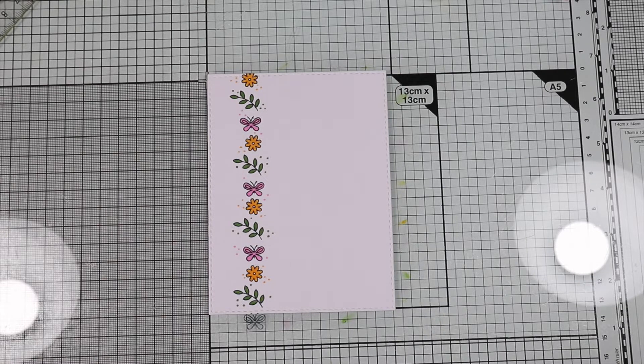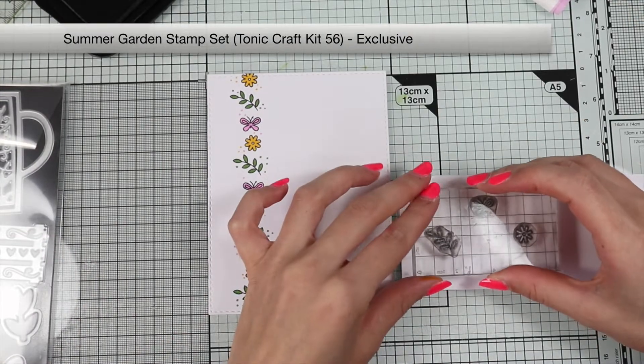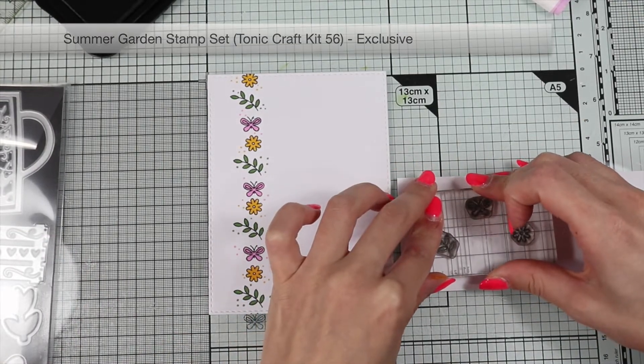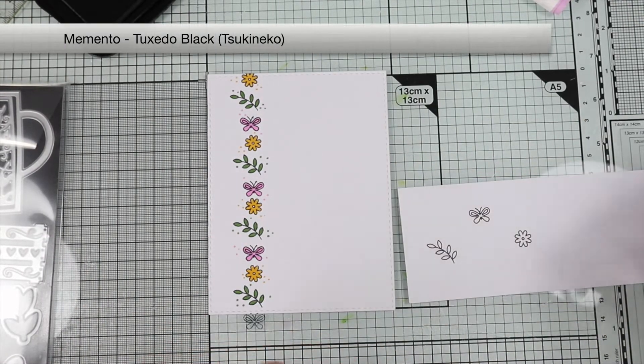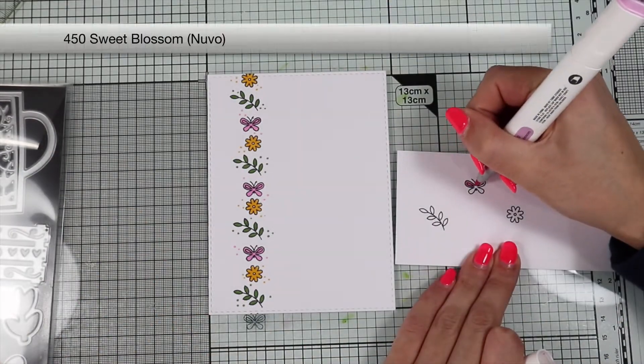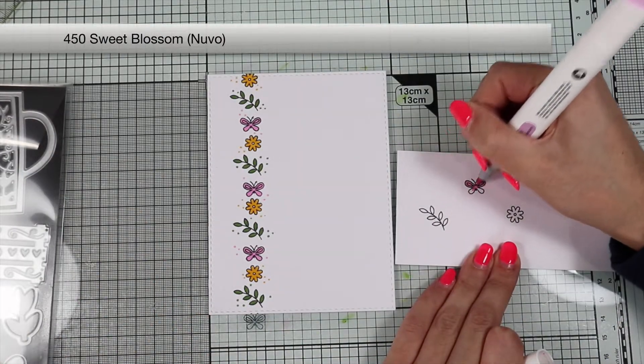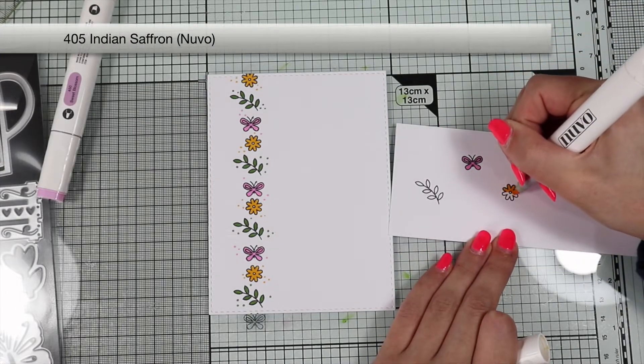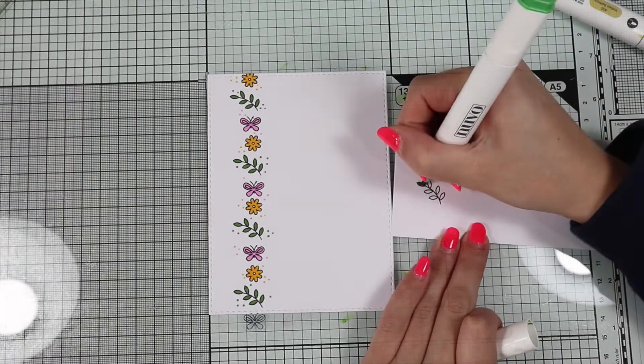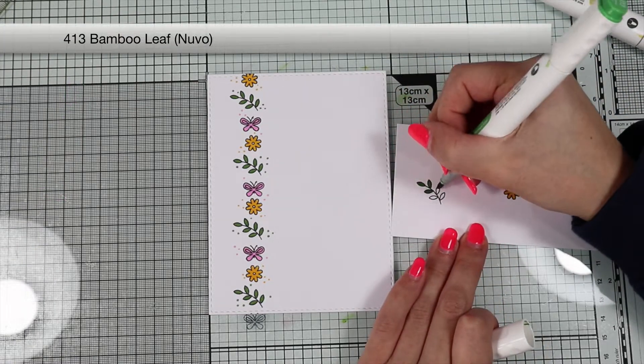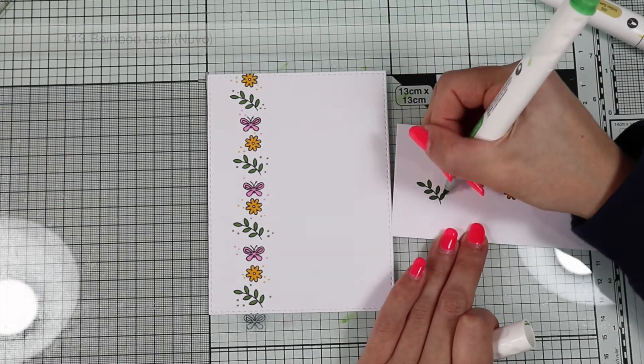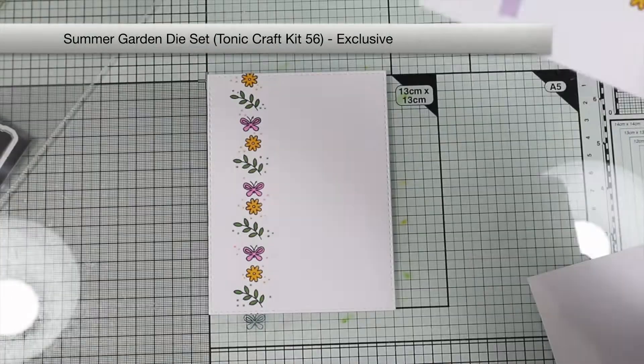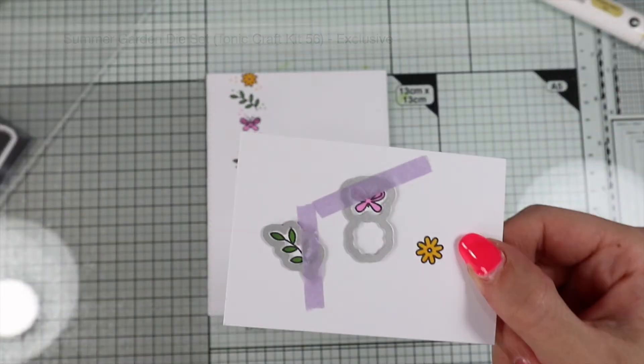Now we can leave the panel as it is, but I'd like to use the dies coordinated with these three stamps. So I stamp them again and color them with the three markers of the kit, like I did before.